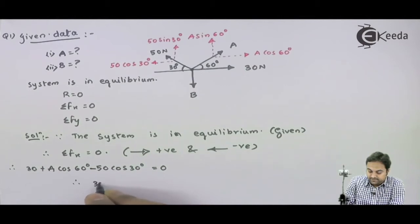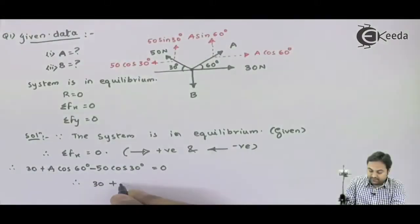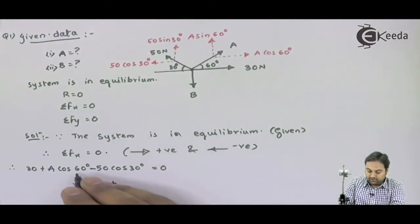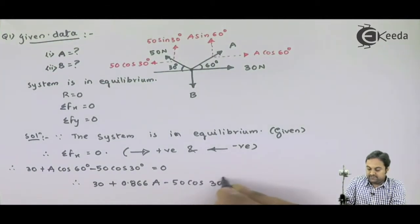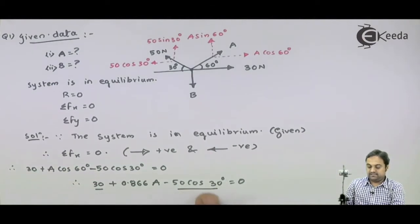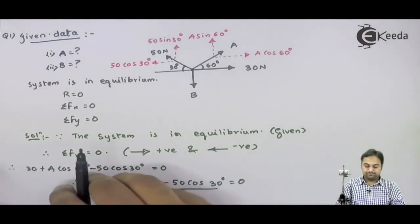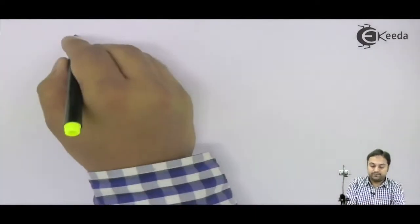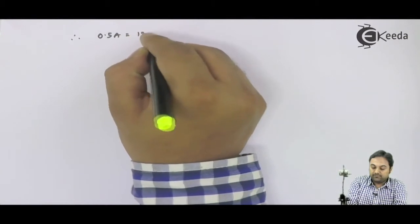Hence here it is 30 plus A cos 60, and the value of cos 60, you can say that it is, it comes out to be - first of all cos 60 it would be 0.866. 50 cos 60 into A minus 50 cos 30, that is equal to 0. Next if I found out this, that is 30 minus 50 cos 30 and A I would be simplifying this to.